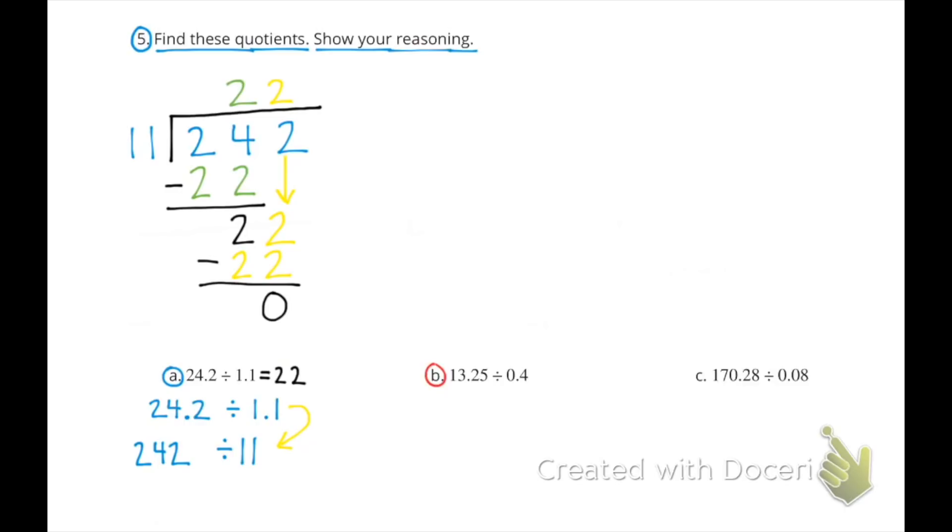B: 13.25 divided by 0.4. 13.25 divided by 0.4 is the same as 1325 divided by 40.